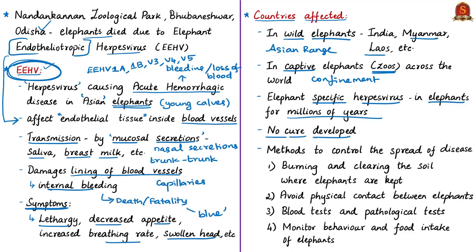There is no cure available against this virus, so the important strategy is only controlling the spread. Mucus secretions in soil have to be removed; the soil of captive sites infected with mucus secretions must be cleared and burned. There should be avoidance of physical contact between elephants.